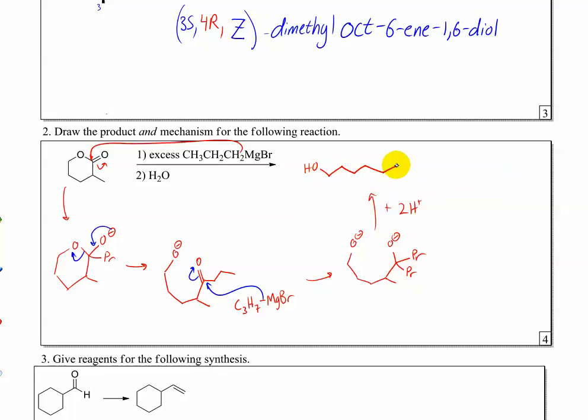And then you protonate that twice. So your final product should be something like this. So you'll have this alcohol, then 1, 2, 3, 4, 5, 6, 7, 8 carbons, 1, 2, 4, 5, 6, 7, 8. The other propyl over here and your other alcohol there and then a methyl group.